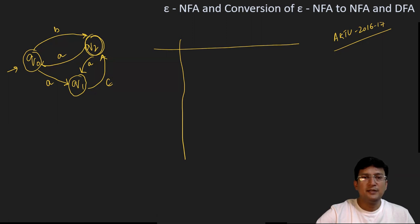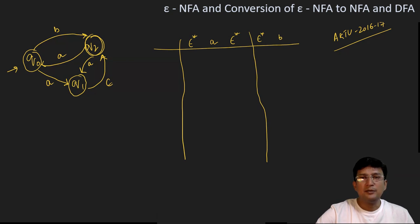For conversion of this, I will first have to find out the Epsilon closure, then the transition with the input alphabet, and then finally we will compute the Epsilon closure again. Similarly, if I have to show the transitions with the symbol B, we will first find out the Epsilon closure, then B, and then the Epsilon closure again. I am taking the first state Q0 and we will find out the states to which I can lead by taking the symbol Epsilon only. Q0 on getting Epsilon will only remain at state Q0.